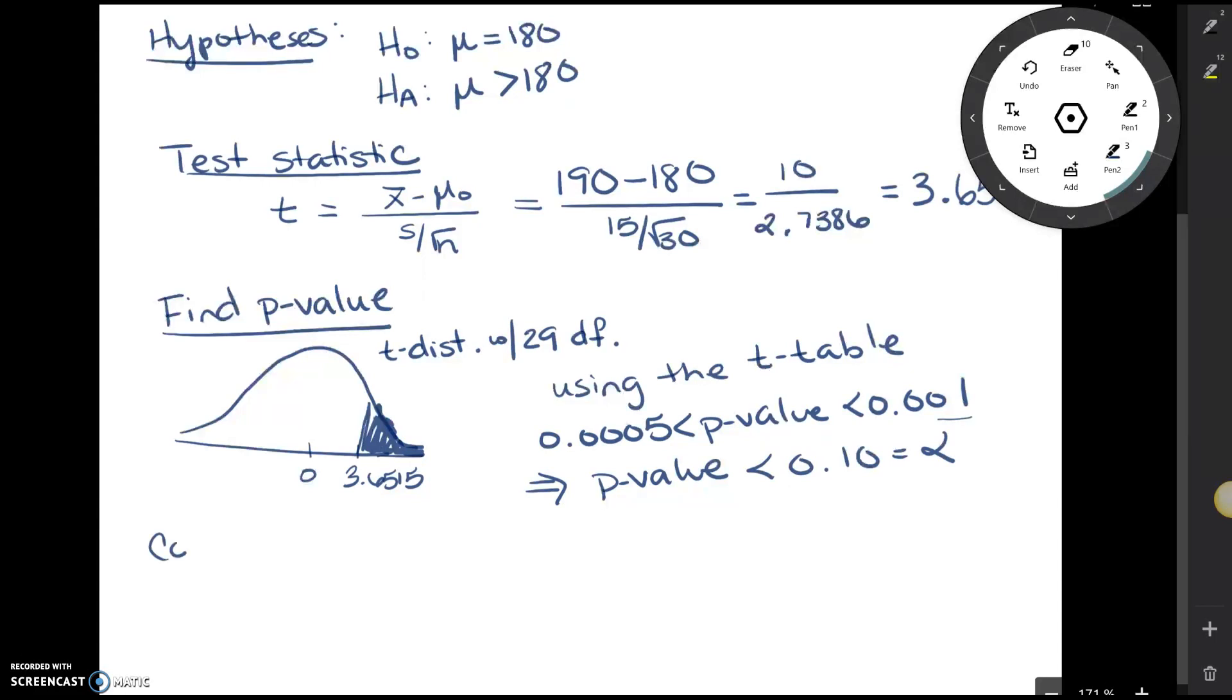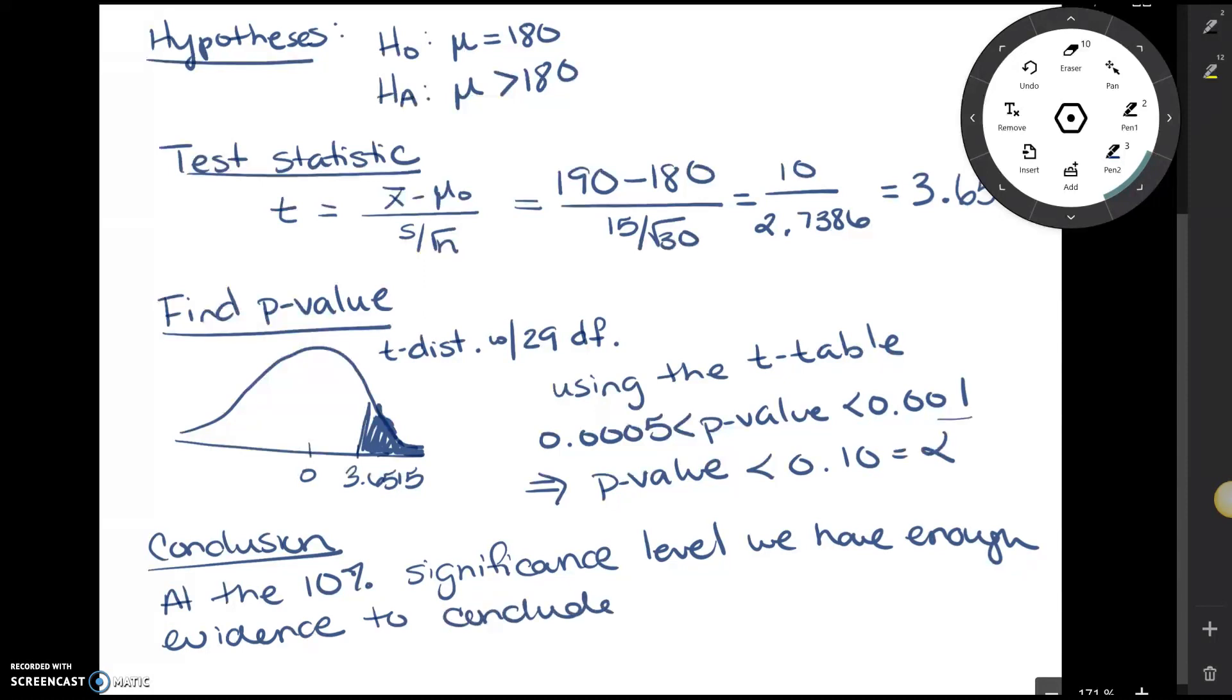So now we can make our conclusion. Our conclusion says at the 10% significance level, we have enough evidence to conclude that the average runtime of the engines is greater than 180 minutes.